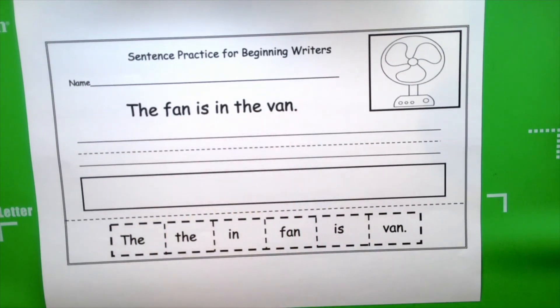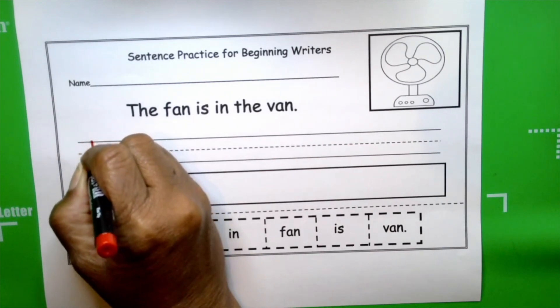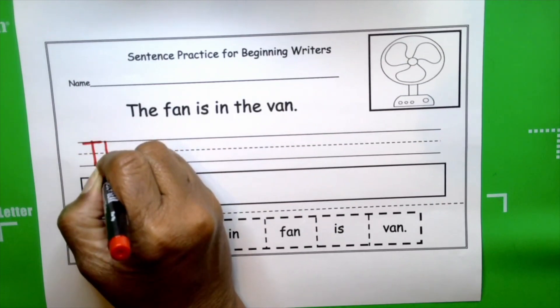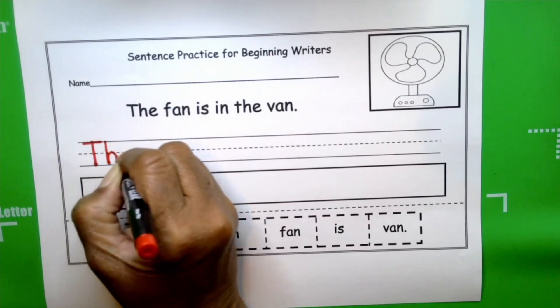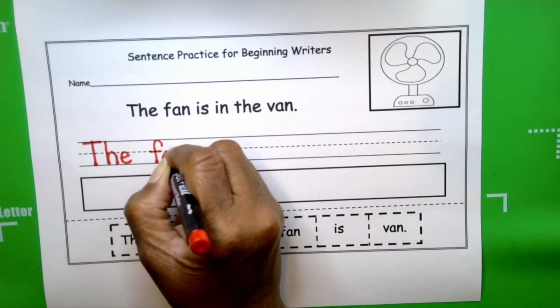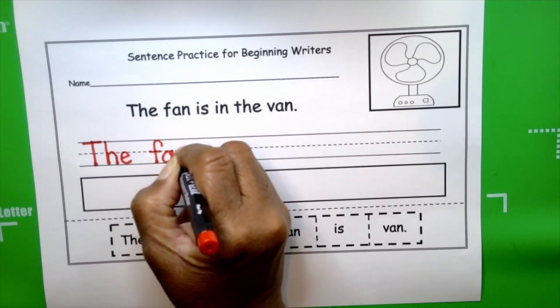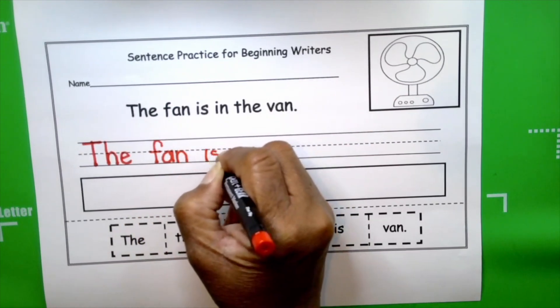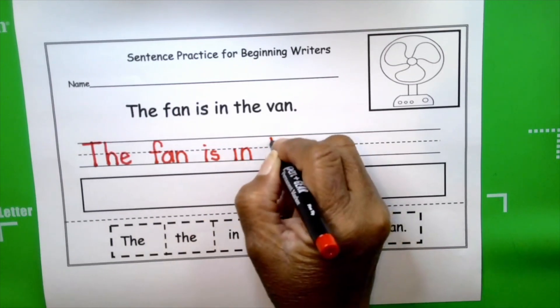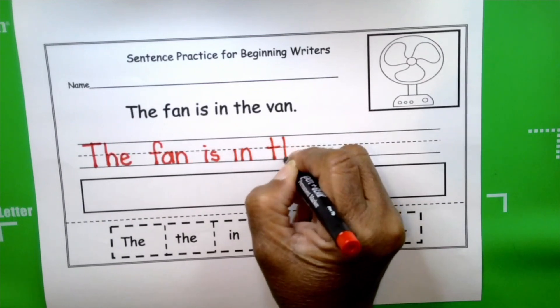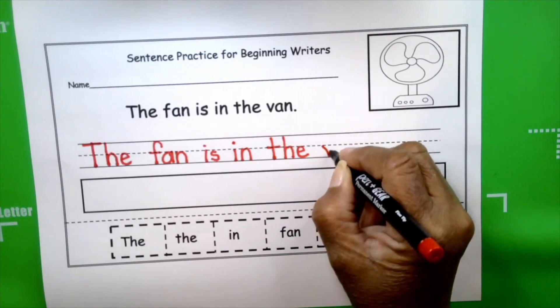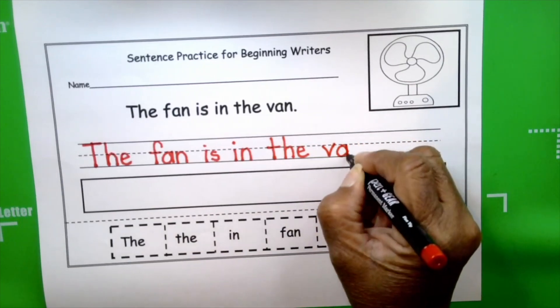Now let's write boys and girls. We're going to start at the skyline. Come down to the grass line with our uppercase T. The fan is in the van.